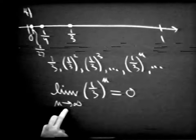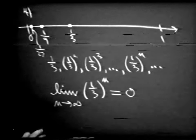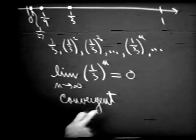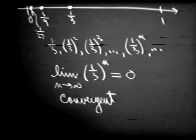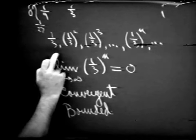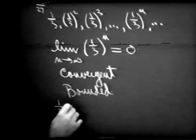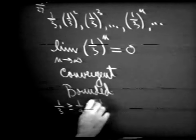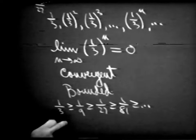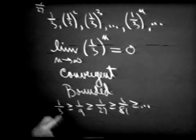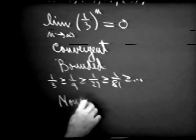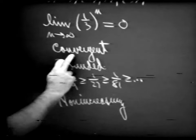Here's a sequence which is convergent. And it's also bounded. So we have a convergent and bounded sequence. Notice: one-third is greater than or equal to one-ninth, which is greater than or equal to one-twenty-seventh, which is greater than or equal to one-eighty-first, and so on. As in our first example the sequence was non-decreasing, here is a sequence which we may call non-increasing. So we have a non-increasing sequence which is convergent and bounded.